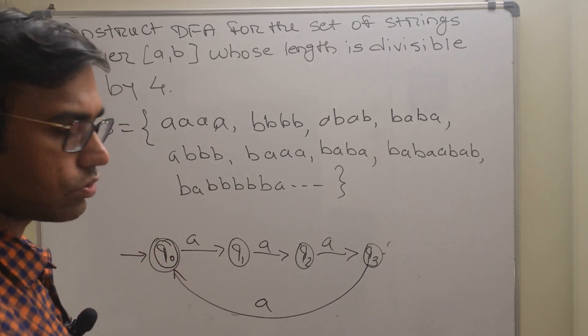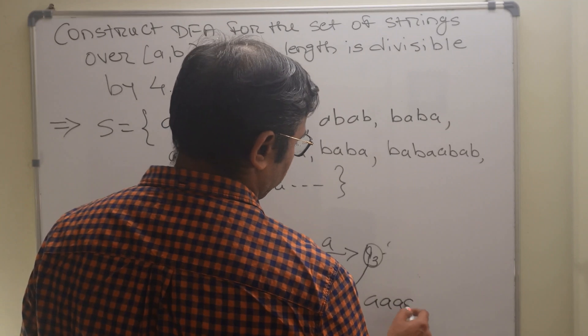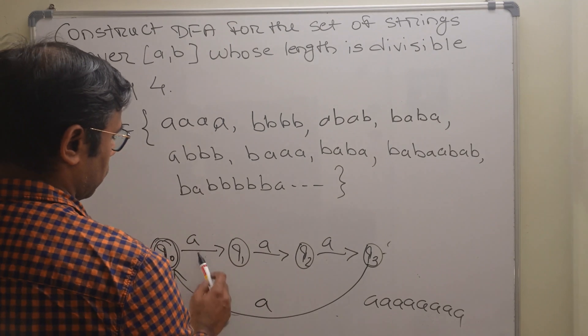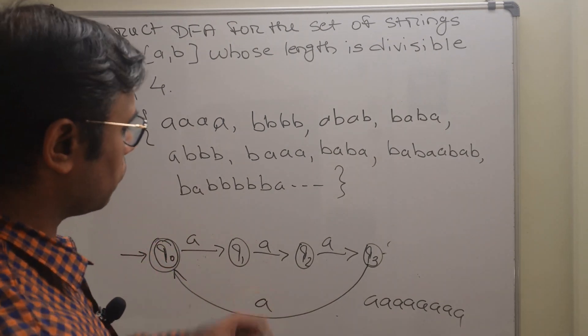So if you take eight times a, again eight times a: one, two, three, four, one, two, three, four. So it leads to final state, so this is valid, okay.